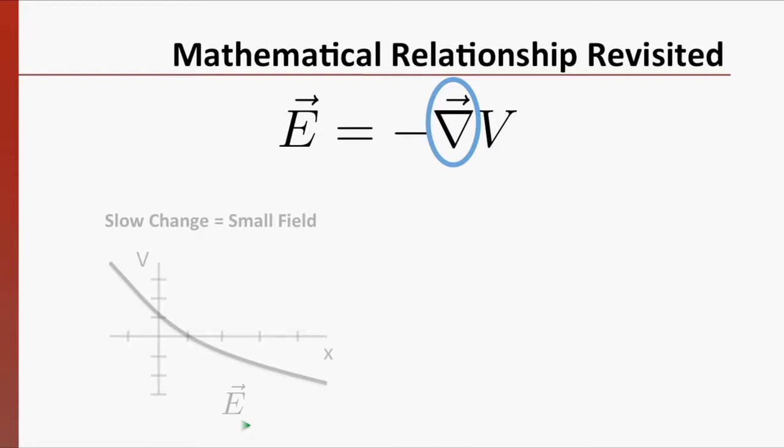On the other hand, if the potential changes quickly over distance, the field is strong. A stronger field is more likely to remove an electron from an atom.